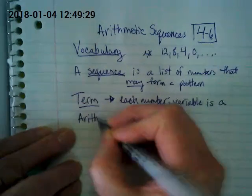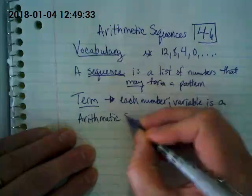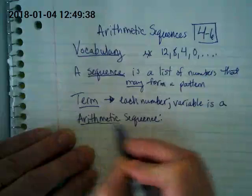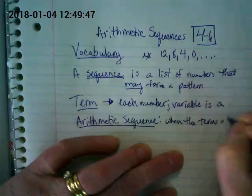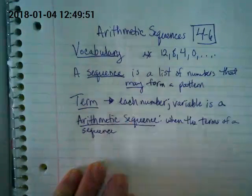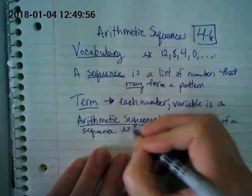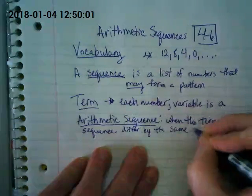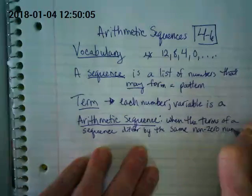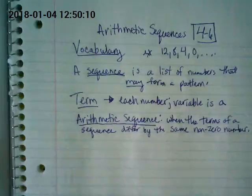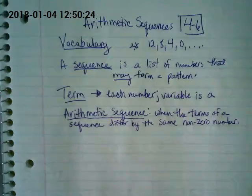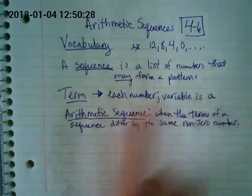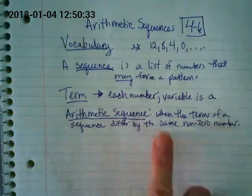Now we get to the real issue of the day — what makes these ones special. So let's define arithmetic sequence: when the terms of a sequence differ by the same non-zero number. It's kind of a confusing definition, but I'll break it down. In an arithmetic sequence, the pattern is that the numbers in it differ by the same non-zero number.